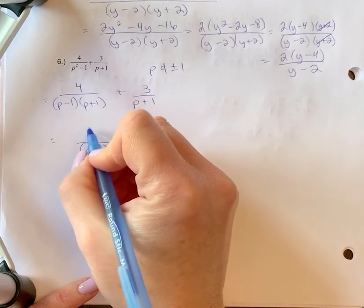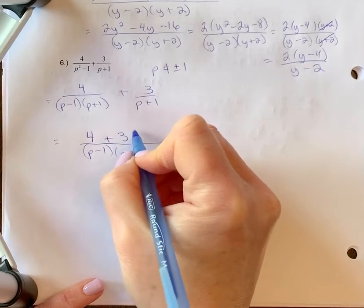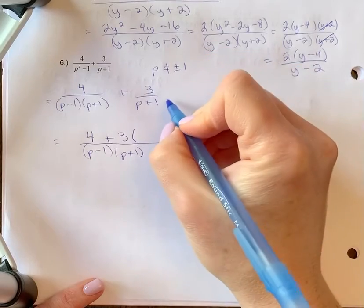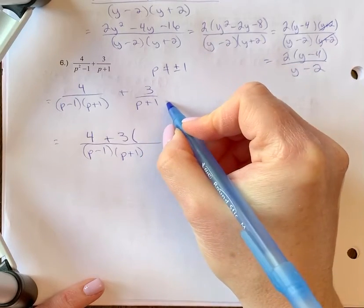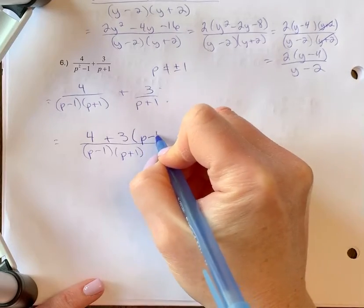So four, we don't need to multiply this, our denominators are the same. So we have four plus three times - we already have p plus one, what's missing is the p minus one, which means you would have multiplied p minus one in the denominator. So you're going to multiply three times p minus one, so we'll write that in here.